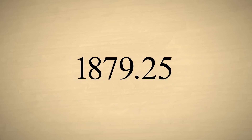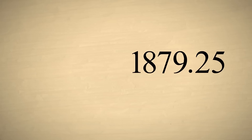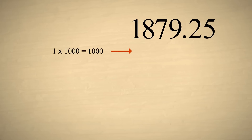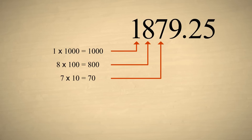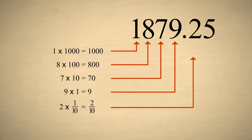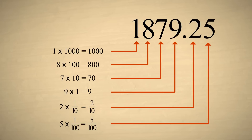the number 1879.25 represents one-thousand, plus eight-hundreds, plus seven-tens, plus nine-ones, plus two-tenths, plus five one-hundredths.